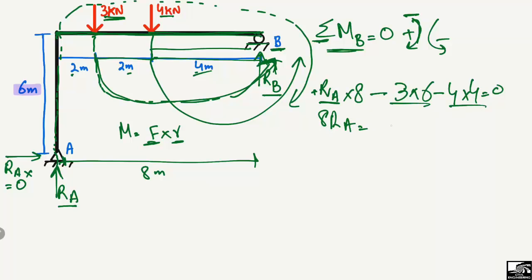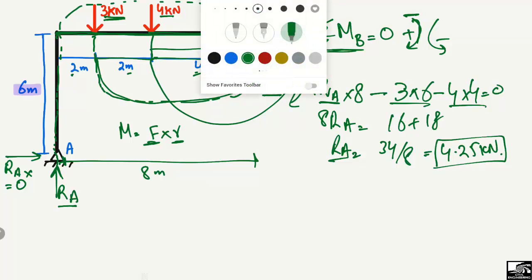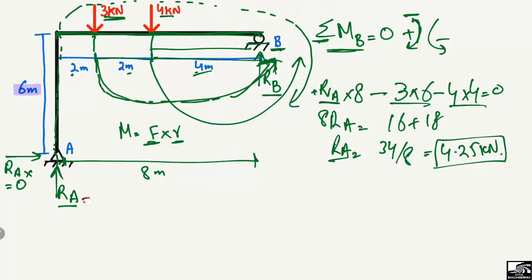Shifting the values to the right side, we get 16 plus 18, and RA comes out to be 34 divided by 8, which gives us 4.25 kilonewtons. So the support reaction RA equals 4.25 kilonewtons.